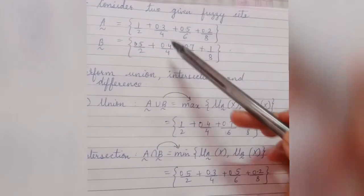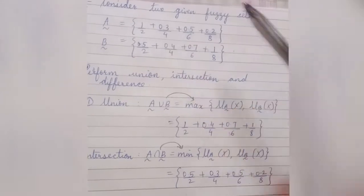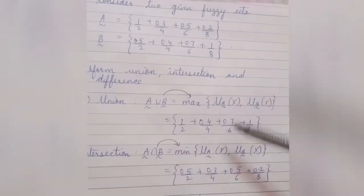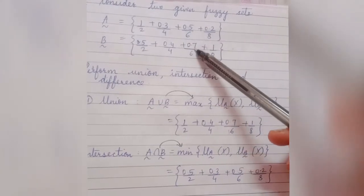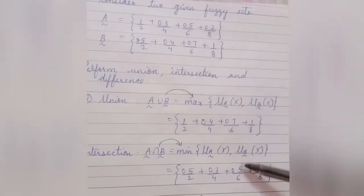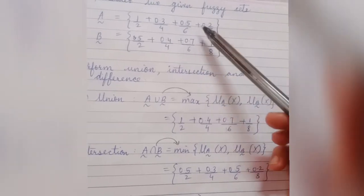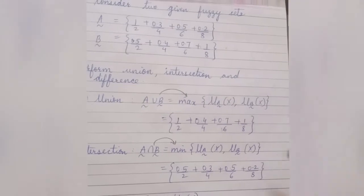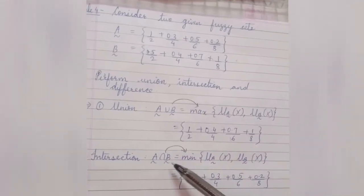For the second element, 0.3 and 0.4 — select minimum, which is 0.3, written as 0.3 upon 4. For the third element, compare 0.5 and 0.7 — minimum is 0.5, written as 0.5 upon 6. For the last element, compare 0.2 and 1 — minimum is 0.2, written as 0.2 upon 8. This is the A intersection B set.